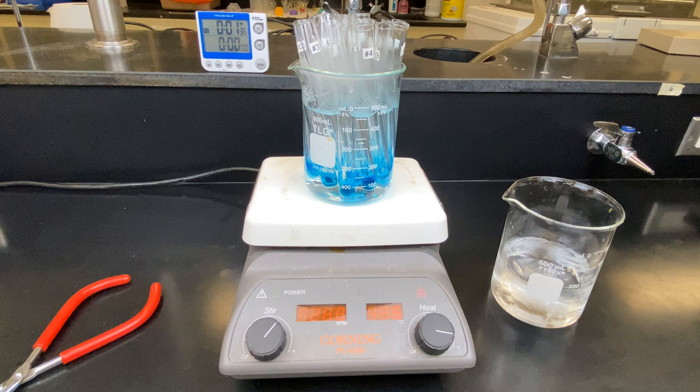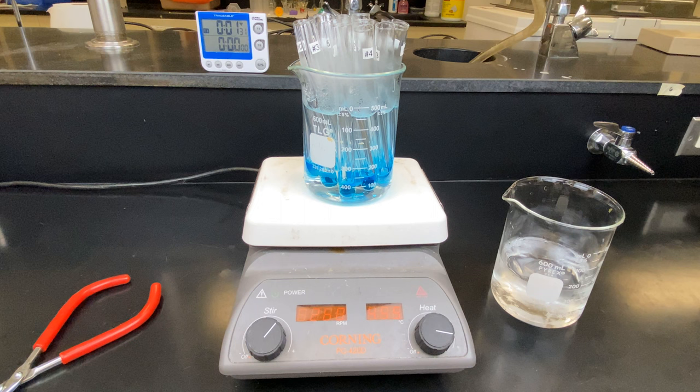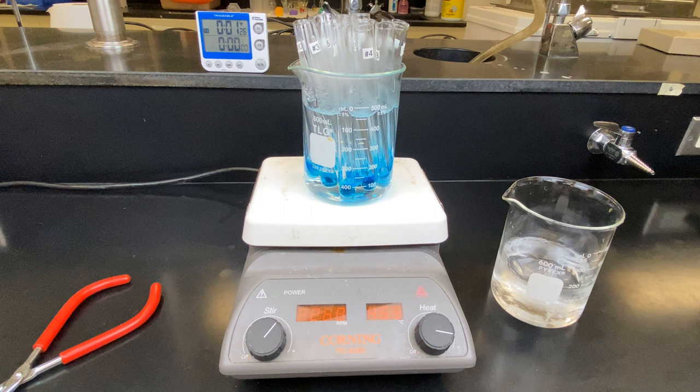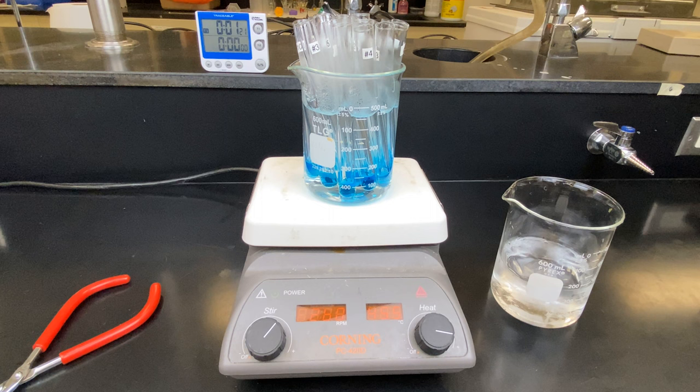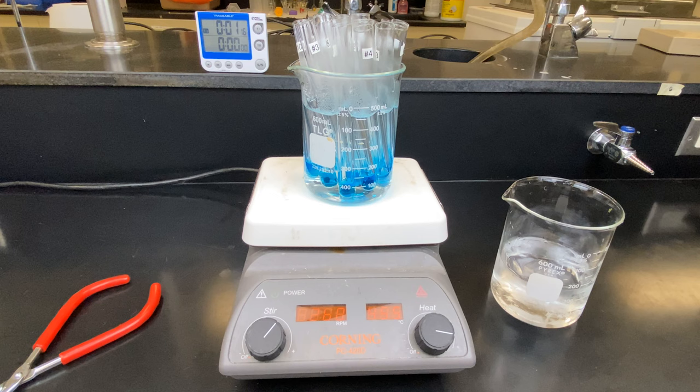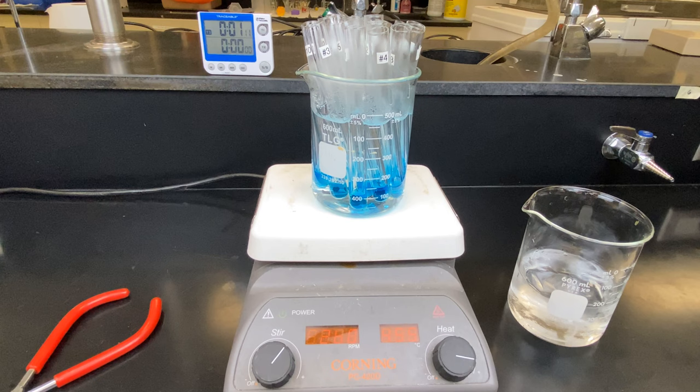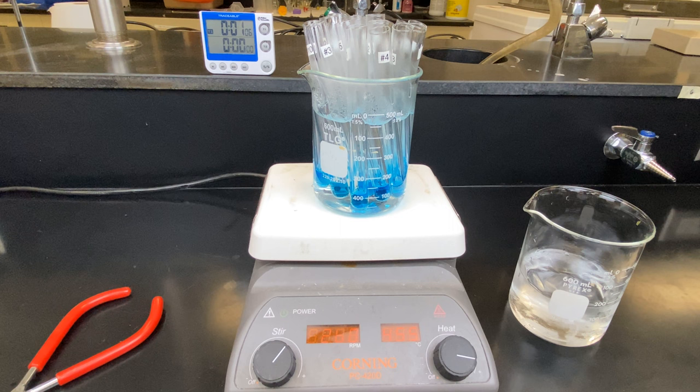As you can see from the timer in the background, we're going to heat these test tubes for two minutes. The protocol I found stated to heat for a longer period of time. It's always important to optimize your experiments. So before I ran this, I did a time course to determine what the optimal time of heating these test tubes would be. Boiling more than two minutes led to the poly and the disaccharides breaking down into monosaccharides and resulted in some false positives, which is why I've decided to boil for only two minutes in this case.